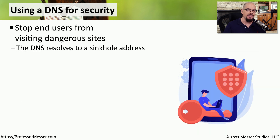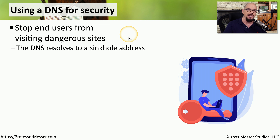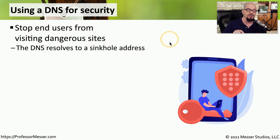We can also use our DNS servers as additional security tools for our endpoints. Since all users must access DNS to get the IP address of the device they'd like to communicate with, we can configure our DNS server so that if a user tries to visit a known malicious location, it won't give out the actual IP address. Instead, it gives a different IP address — one we've configured — called a sinkhole address. This means the user will not be redirected to the malicious site but to a different location, and we can perform logging and reporting on how many people have been accessing our private sinkhole address.